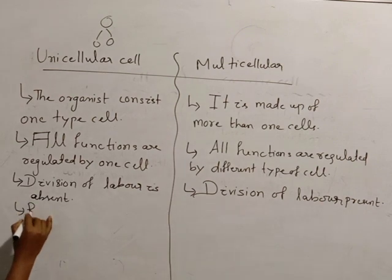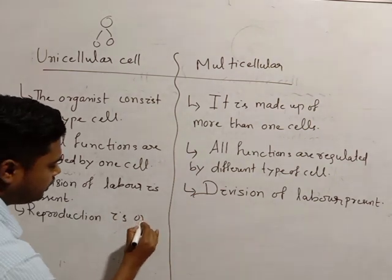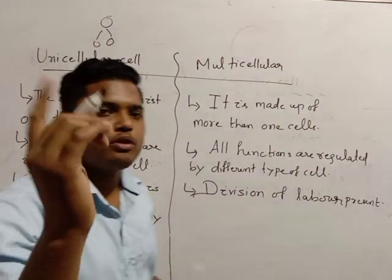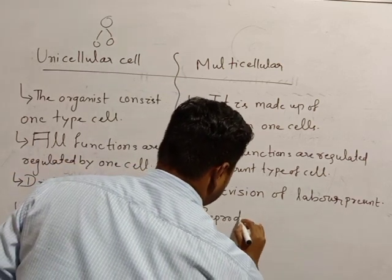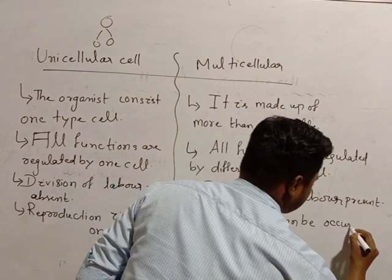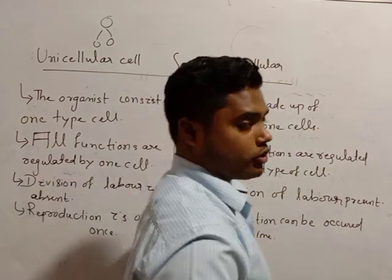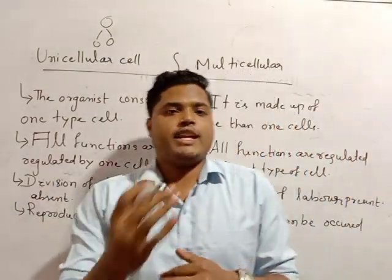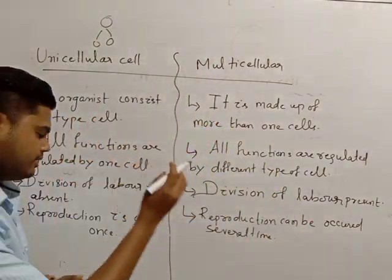Next, here in unicellular, reproduction occurs only once because there is only one cell, the whole organism itself. In multicellular, reproduction can occur several times.